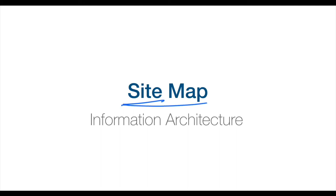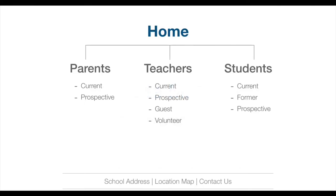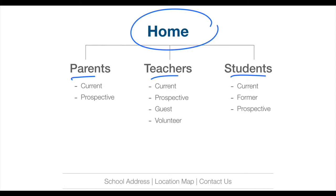Having done the audience definition and needs analysis, we create a schematic of the flow of information on the website called the site map — also known as the information architecture. It's like the blueprint an architect creates for a building. We created a simple site map: there will be a homepage, which could be a single-page scroll-down website with information for parents, teachers, and students on the same page, or a multiple-page website with a landing page and separate pages for each audience group.